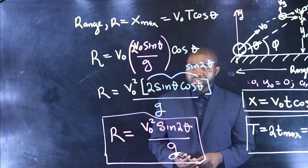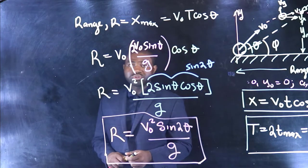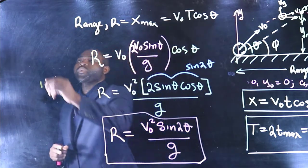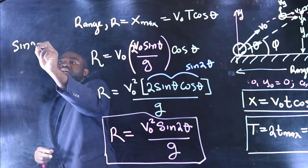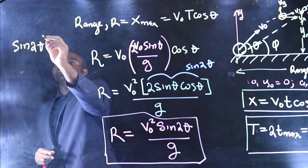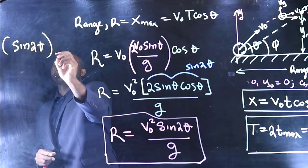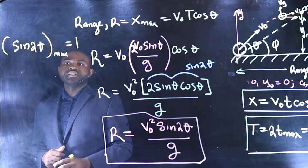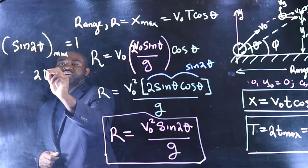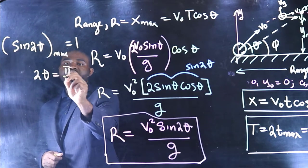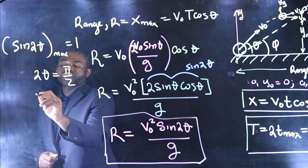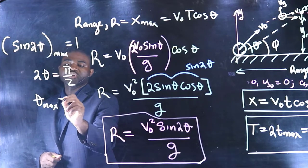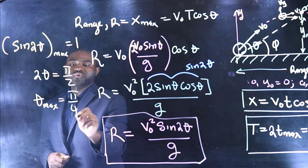You can easily deduce that from trigonometry, because the sine of 2 theta max is equal to 1, and this occurs when 2 theta is equal to pi over 2. Therefore, theta max is equal to pi over 4.